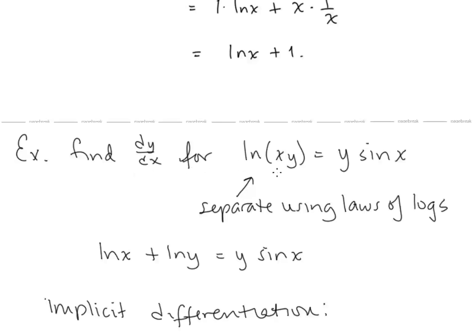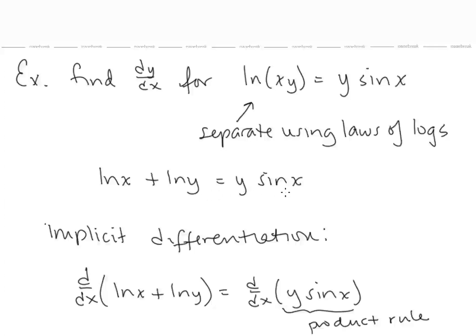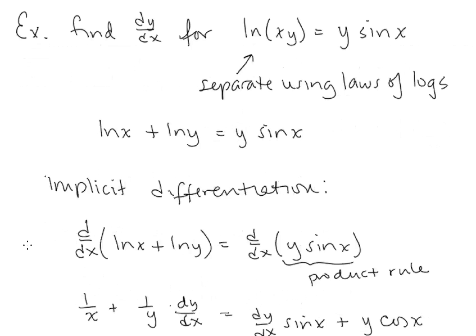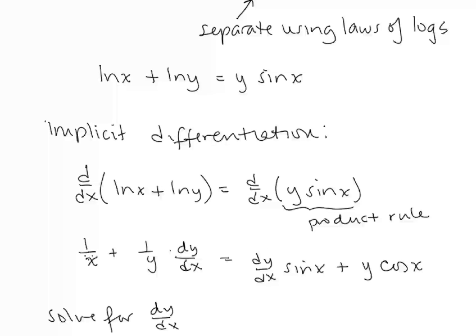Here we're asked to find dy/dx for ln(xy) equal to y sin x. The first thing I want to do is use laws of logarithms to separate ln(xy). As written, it looks like implicit differentiation with a product inside a chain, so to simplify, let's write this as ln x plus ln y on the left-hand side. Now we take the derivative with respect to x of both sides. On the left side, we get 1 over x plus 1 over y times dy/dx. On the right side, we use the product rule: derivative of y is dy/dx multiplied by sin x, plus y times the derivative of sin x, which is cos x.